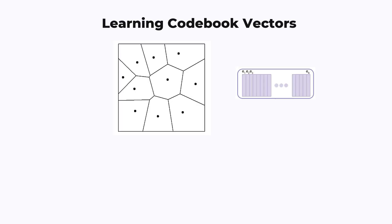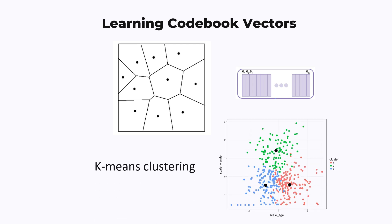The last topic I'm going to cover in this video is how do you learn these codebook vectors? You need to assign indices to these vectors, but where should you put them in a way that's optimal? Because if you have the encoder already trained, the most straightforward way is to use something like k-means clustering. This is a classic machine learning algorithm where, given a set of points and a number k, it can learn the optimal way of placing k centroids so that the distance from a random point to a centroid is as small as possible. The Encodec paper does this as a first step, but we can do more than k-means.